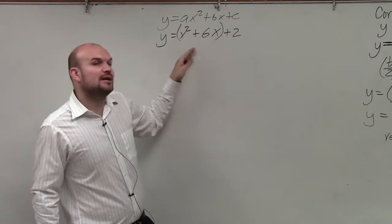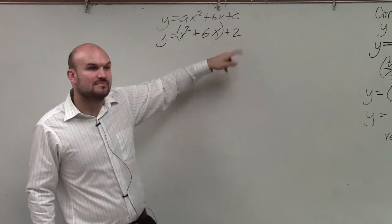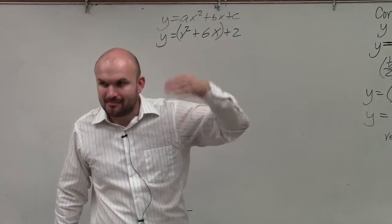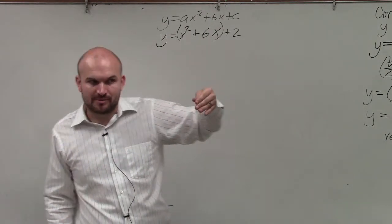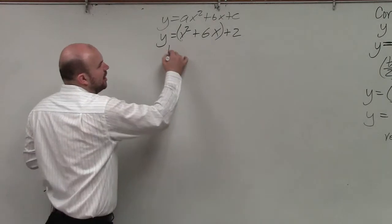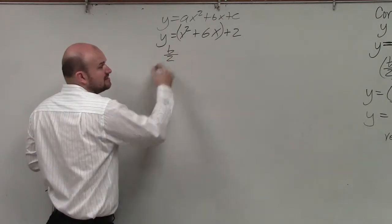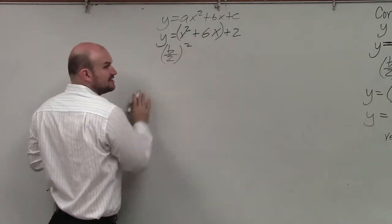So what I'm going to do is I'm going to put parentheses around the first two terms, and I'm going to create my own perfect square trinomial. So to create it, all I simply do is take b divided by 2 and then square it.